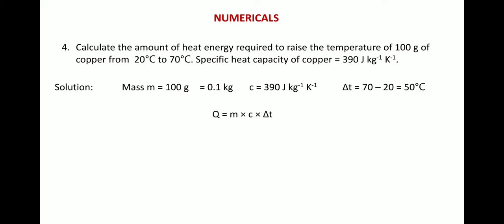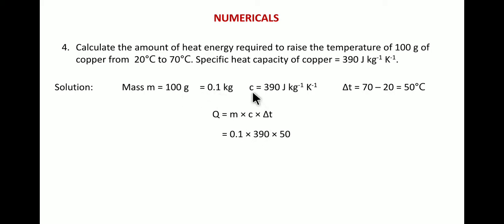Using the formula Q = M × C × ΔT, where Q is heat energy, M is mass, C is specific heat capacity, and ΔT is the change in temperature: Q = 0.1 × 390 × 50 = 1950 joules. So 1950 joules of heat energy will be required.